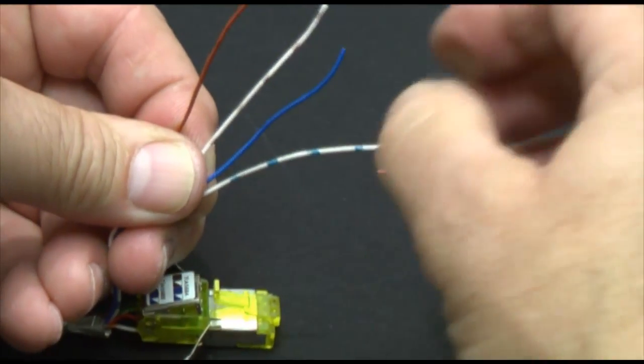Separate the remaining four conductors and twist them in order to match the color coding on the other side of the connector. Brown solid, brown stripe, blue solid and blue stripe.